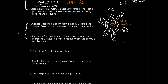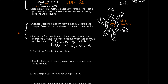Number five: describe the four quantum numbers based on what they represent, and be able to identify possible and invalid quantum number sets. We have n, l, mₗ, and m_s. The rules are: n can be 1, 2, 3 — any positive integer up to infinity; l can be 0, 1, 2, up to n − 1; mₗ can be anything from −l to +l; and m_s can be +½ or −½.